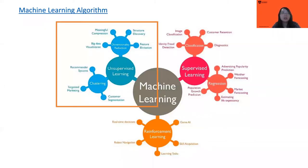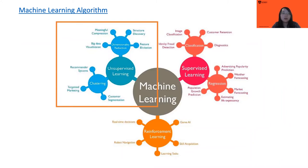In unsupervised learning, there are many paths — such as clustering and dimensionality reduction. Clustering can be used for recommender systems, marketing, and customer segmentation. Dimensionality reduction can be used to visualize meaningful data — for example, in big data visualization, if we reduce data to just two dimensions, we can directly visualize it in a figure.